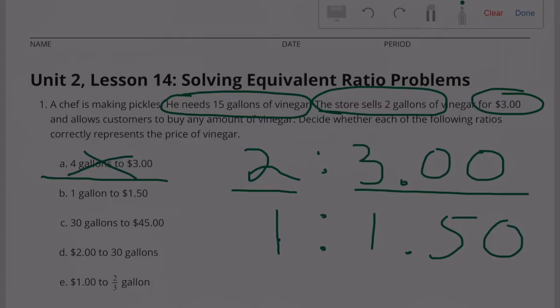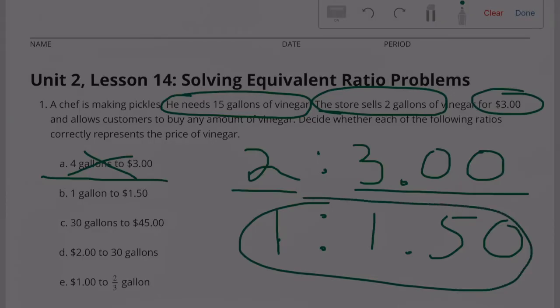Option B: 1 gallon to $1.50. Yes, we know that's true.